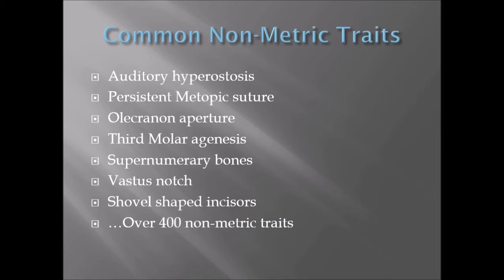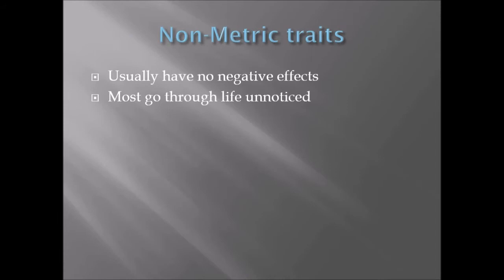There are over 400 of these traits - in fact, by now probably well over 600 or 800. Usually, non-metric traits have absolutely no negative effects; the person would go through life unaware they have them. Even noticeable traits like shovel-shaped incisors - unless someone is taught about them, they won't necessarily know. Third molar agenesis is an exception - people would know because they didn't need wisdom teeth extracted. But the vast majority are virtually unnoticeable.